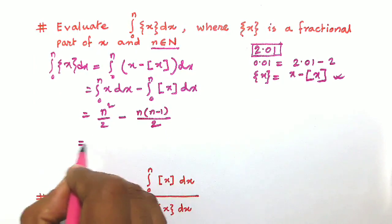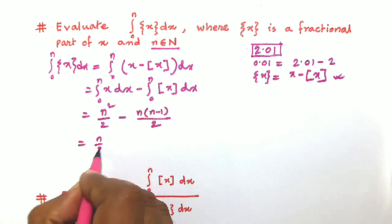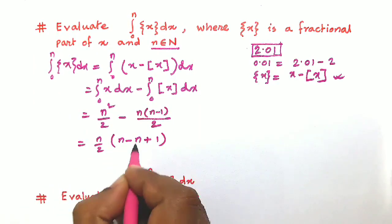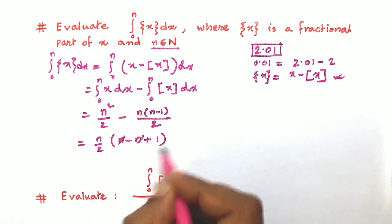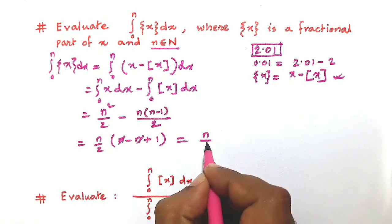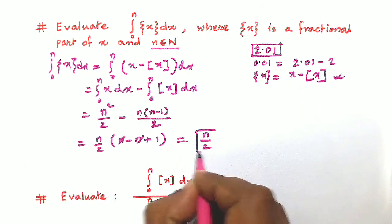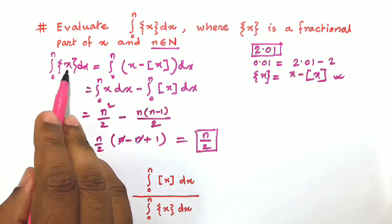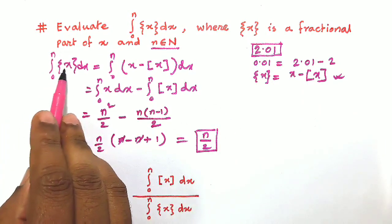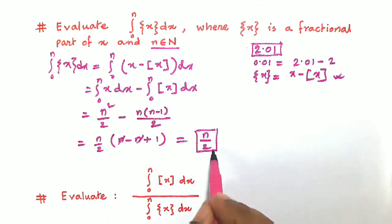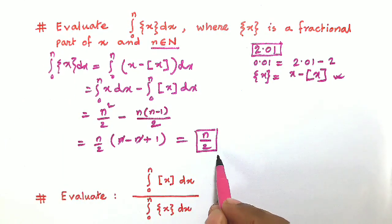Taking n divided by 2 common from both terms, we get n over 2 times (n minus (n minus 1)), which simplifies to n over 2 times 1. So the integration from 0 to n of the fractional part of x dx equals n divided by 2.